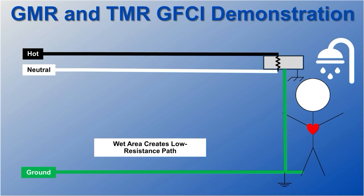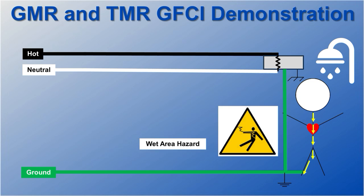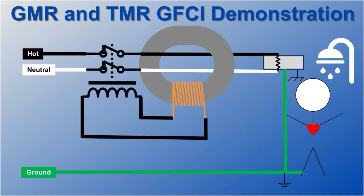One exception occurs in wet areas where the ions in tap water significantly lower the electrical resistance of the human body. A definite hazard exists in any wet area, which is why GFCI is mandatory in bathrooms and around sinks.